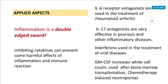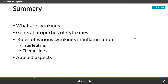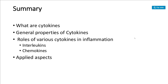Interferons are used in the treatment of viral diseases. Targeting receptor molecules with antagonist therapies is very common and important to reduce dangerous inflammatory reactions that could otherwise lead to death. In summary, today we covered the basic idea of cytokines, their general properties, their role in inflammation, and specifically interleukins and chemokines, including their applied aspects in different types of diseases.